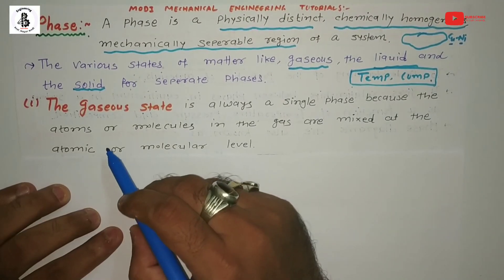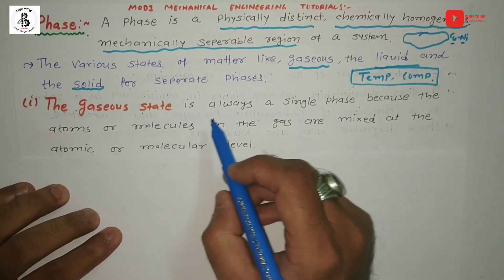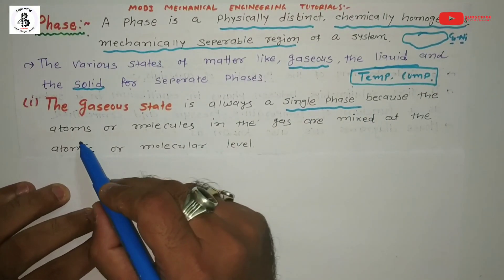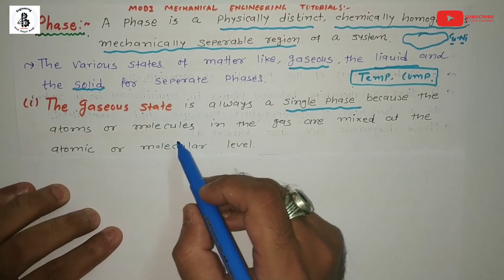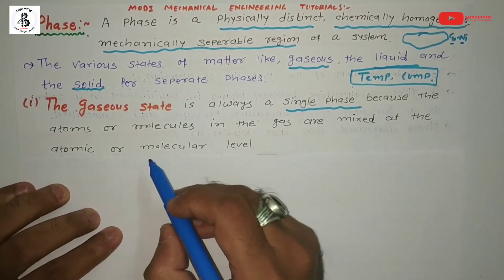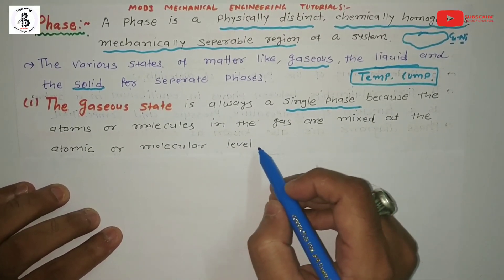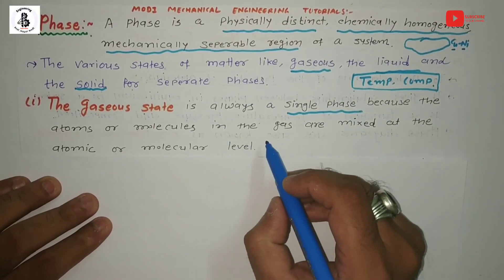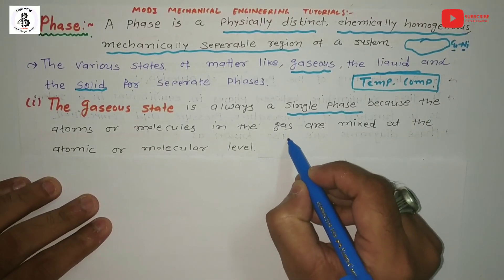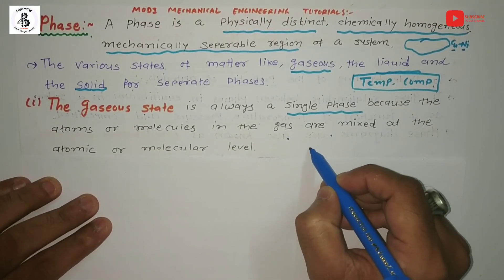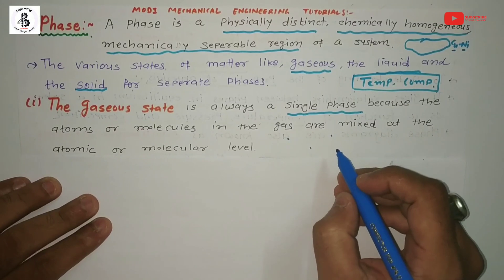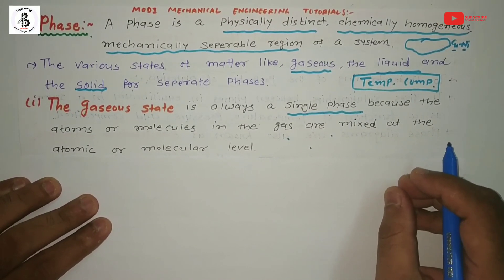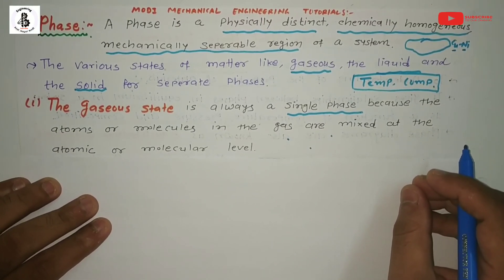The gaseous state is generally a single phase, because all atoms or molecules in the gas are mixed at the atomic or molecular level. In the gaseous state the distance between atoms or molecules is larger, forming the gaseous phase. This generally occurs at higher temperatures with different compositions of the metallic structure.